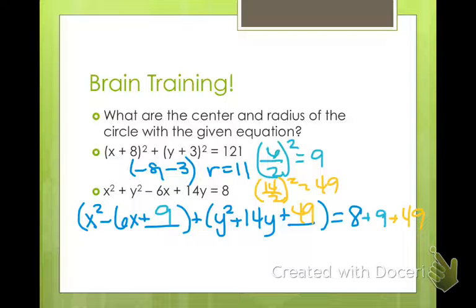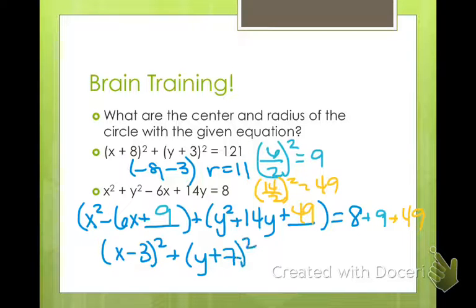Now I'm going to rewrite these. This becomes (x - 3)². This becomes (y + 7)². And then if you add 8 and 9 and 49 together, I believe you get 66. That equals 66.